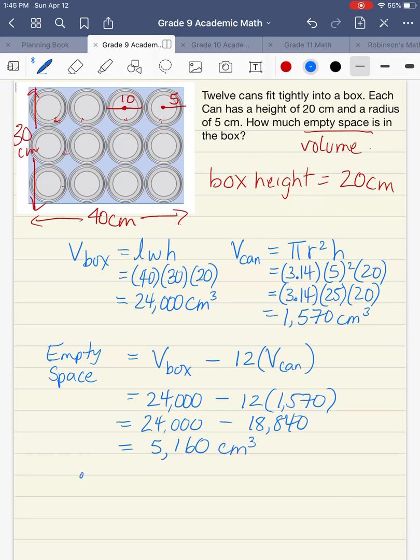That's how much empty space we have. We'll write a quick summary sentence. Therefore, there is 5,160 centimeters cubed of empty space.